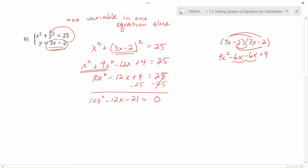Now, with the 10x squared here and the 21, there's a lot of factors there to try. I'm just going to go ahead and get started with the quadratic formula on this one to solve it now. I'm going to let a be 10, b will be negative 12, and c will be negative 21.